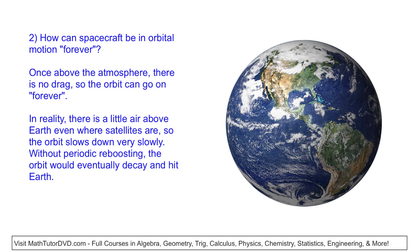The second question: how can a spacecraft be in orbital motion forever? Basically, once you're above the atmosphere, there's no drag, so there's no slowing down — there's no air. But in reality, Earth's atmosphere doesn't just stop abruptly; it's very, very tenuous up where space stations and satellites travel, so there is a tiny bit of air. That air will very, very slowly slow you down, and if you slow down you'll drop out of orbit. So real satellites and spaceships need to periodically reboost themselves to get back above the drag. But effectively, once above the atmosphere — or in the case of planets, which aren't in the Sun's atmosphere — you really do go on essentially forever because there's nothing to slow you down.